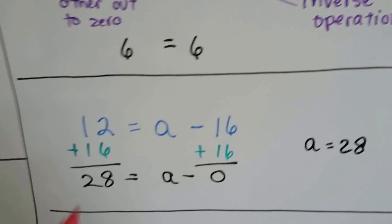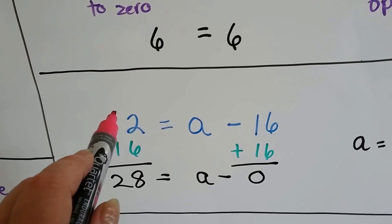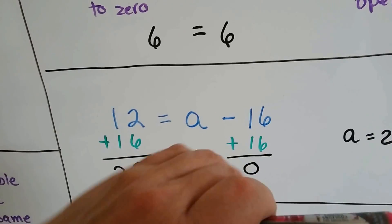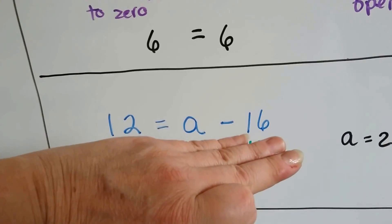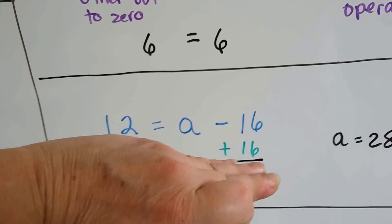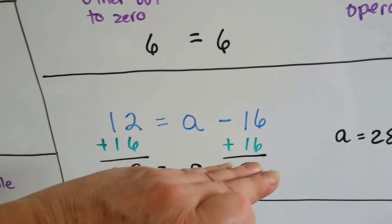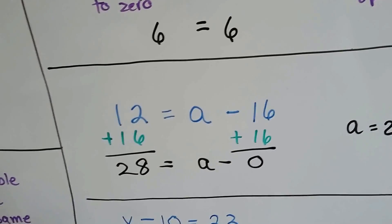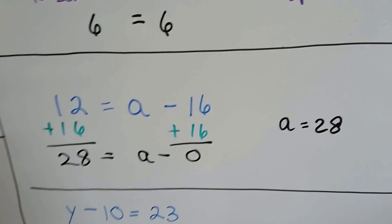So now we've got the difference in the front and the variables in the middle. So we've got 12 is equal to a minus 16. What we do is we need to get the a by itself. So if we've got a minus 16, we're going to do plus 16. But the 12 gets jealous and it wants plus 16 also. So we end up with 28. a is equal to 28.